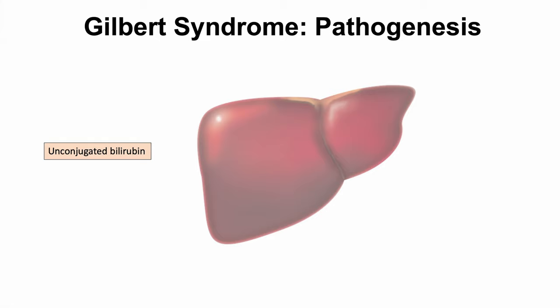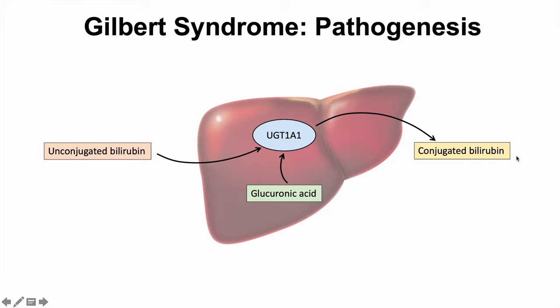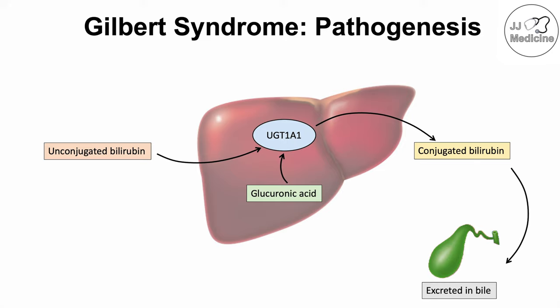Unconjugated bilirubin from breakdown of hemoglobin goes to the liver because unconjugated bilirubin is not water-soluble, and we need it to be water-soluble. It enters the liver where UGT1A1 takes glucuronic acid and adds it to the unconjugated bilirubin, producing conjugated bilirubin. This glucuronic acid makes conjugated bilirubin water-soluble, so it can be excreted in bile — entering the gallbladder and being excreted. That is how we get rid of bilirubin.